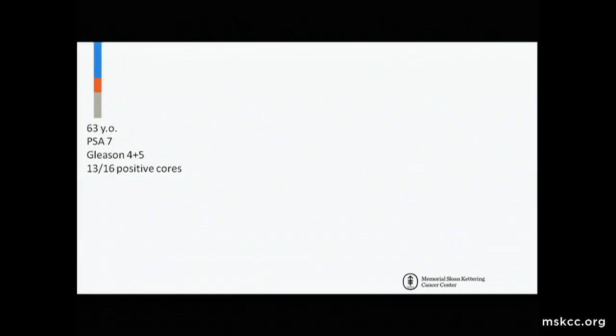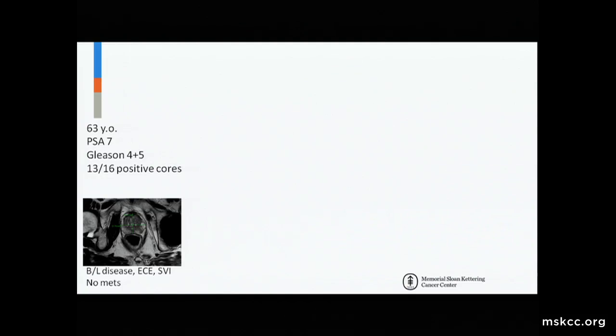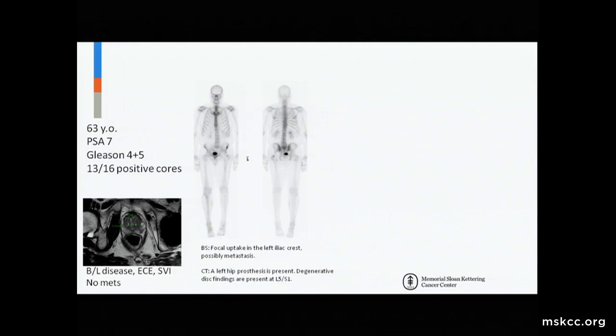As a start, I'm going to show a patient that Jonathan and I share. This gentleman is 63, PSA is 7, Gleason 4 plus 5 disease, biopsy 13 out of 16 positive cores. MRI shows bilateral disease, extra capsular extension, seminal vesicle involvement. No metastatic disease on the MRI of the prostate and pelvis. Looks pretty clean on a bone scan. There's some uptake in the left iliac area but CT showed no sclerosis. The patient was felt to have non-metastatic disease.